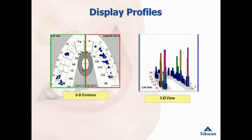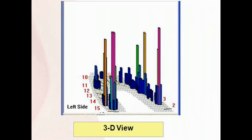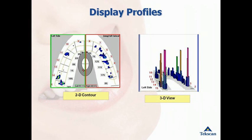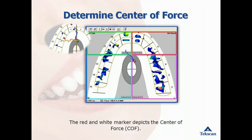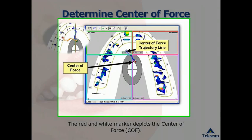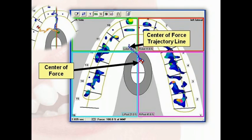T-Scan displays the data in many different ways. There is a 2D contour view that most closely resembles articulating paper marks. There is also a 3D view which is a great tool for patient education because you can see the height of the column correlating with the intensity of the force. Each T-Scan recording has a center of force trajectory line that displays the history of the patient's bite, color coded to easily identify when the patient is occluding, holding down, or where the excursion begins. Each segment of the center of force trajectory line represents one hundredth of a second in time.